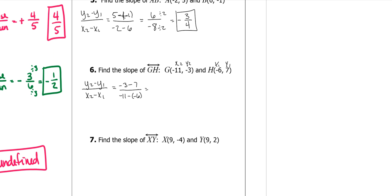Negative 3 minus 7 is negative 10. Minus a negative means plus. So negative 11 plus 6 is negative 5.